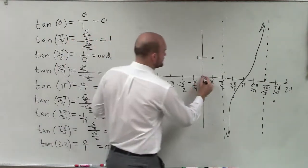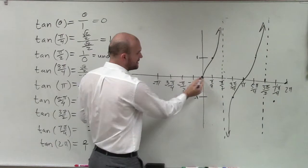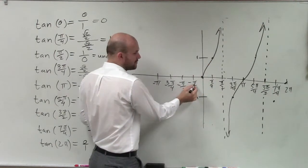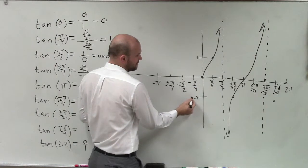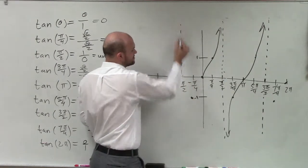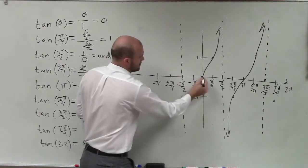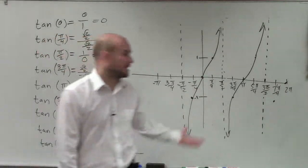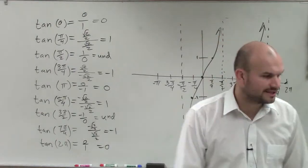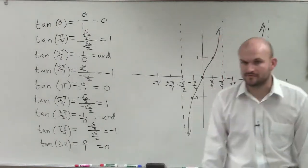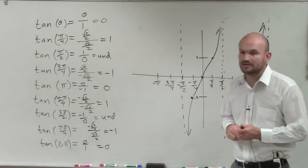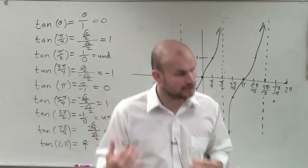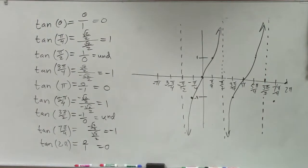At negative pi over 4, if pi over 4 is 1, then negative pi over 4 is going to be negative 1. And negative pi halves will be another asymptote. So that would be at least two full periods of your tangent graph. We'll get into some of the characteristics of tangent as we move on to its important points, but I want you to see what the tangent graph looks like.